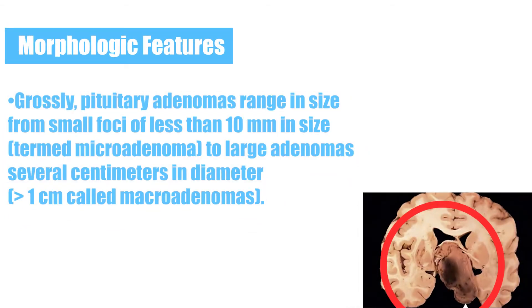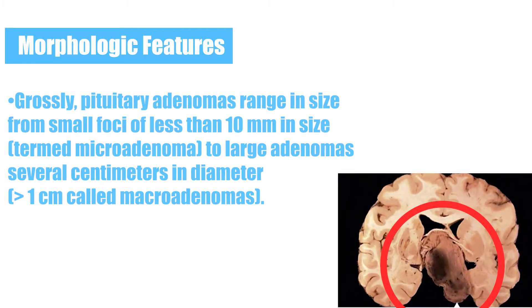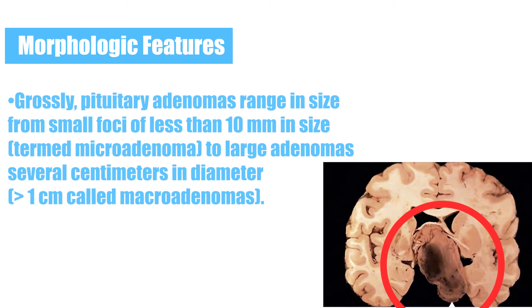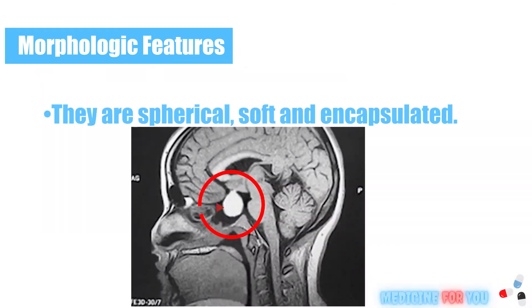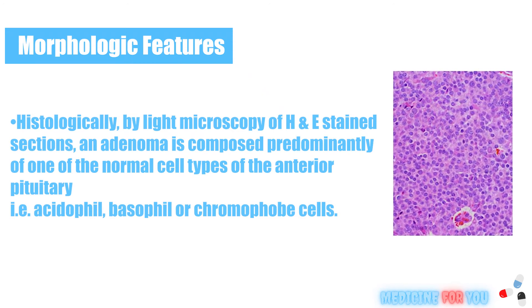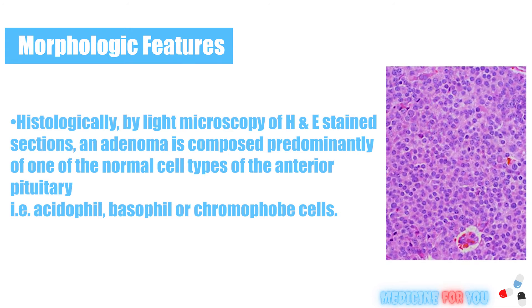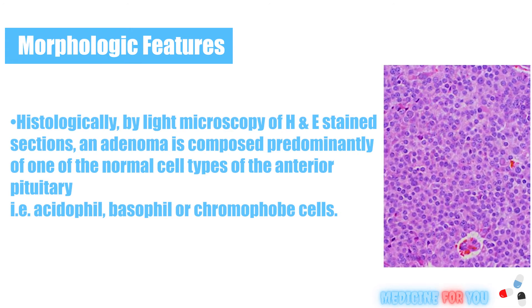Regarding morphologic features, grossly pituitary adenomas range in size from small foci of less than 10 millimeters, termed microadenomas, to large adenomas several centimeters in diameter — greater than 1 centimeter — called macroadenomas. They are spherical, soft, and encapsulated. Histologically, by light microscopy of H&E stained sections, an adenoma is composed predominantly of one of the normal cell types of the anterior pituitary, i.e., acidophil, basophil, or chromophobe cells.